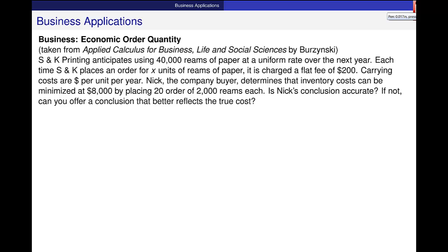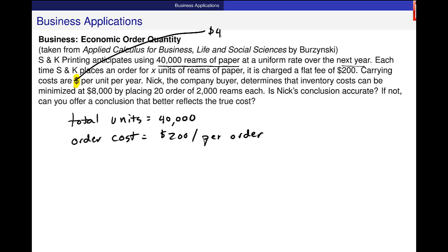So I want to use what we just developed in this particular application. SNK printing anticipates using 40,000 reams of paper at a uniform rate over the next year. So total units equals 40,000. Each time SNK places an order for x units, it's charged a flat fee of $200. So ordering cost per order, $200. Carrying costs are $4 per unit per year.